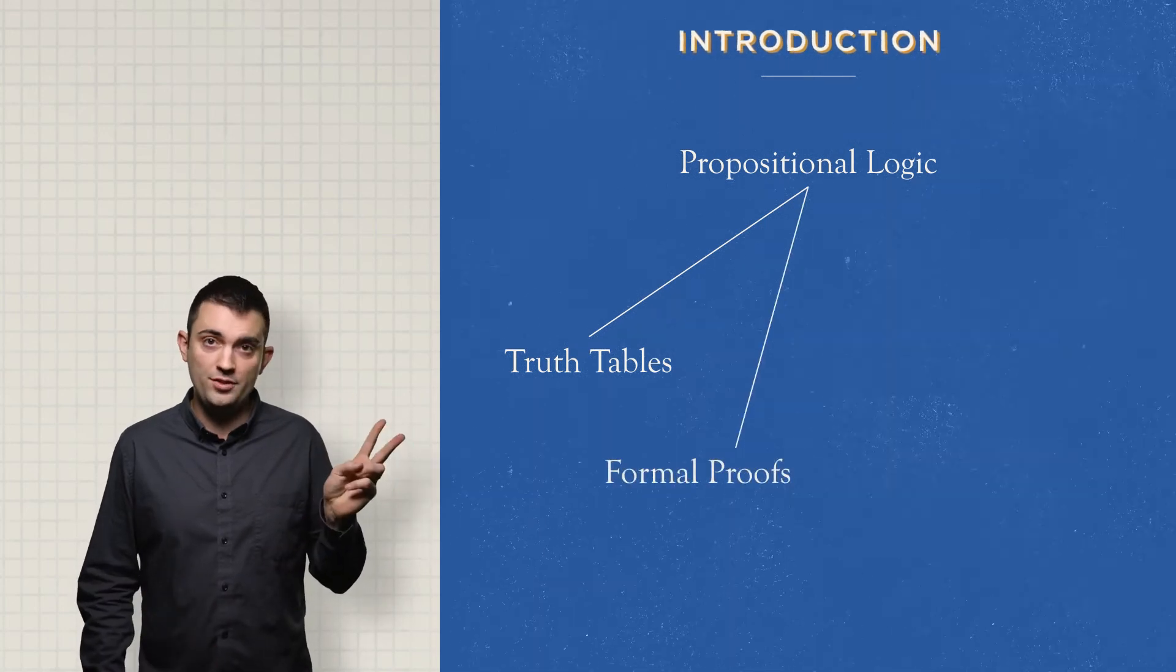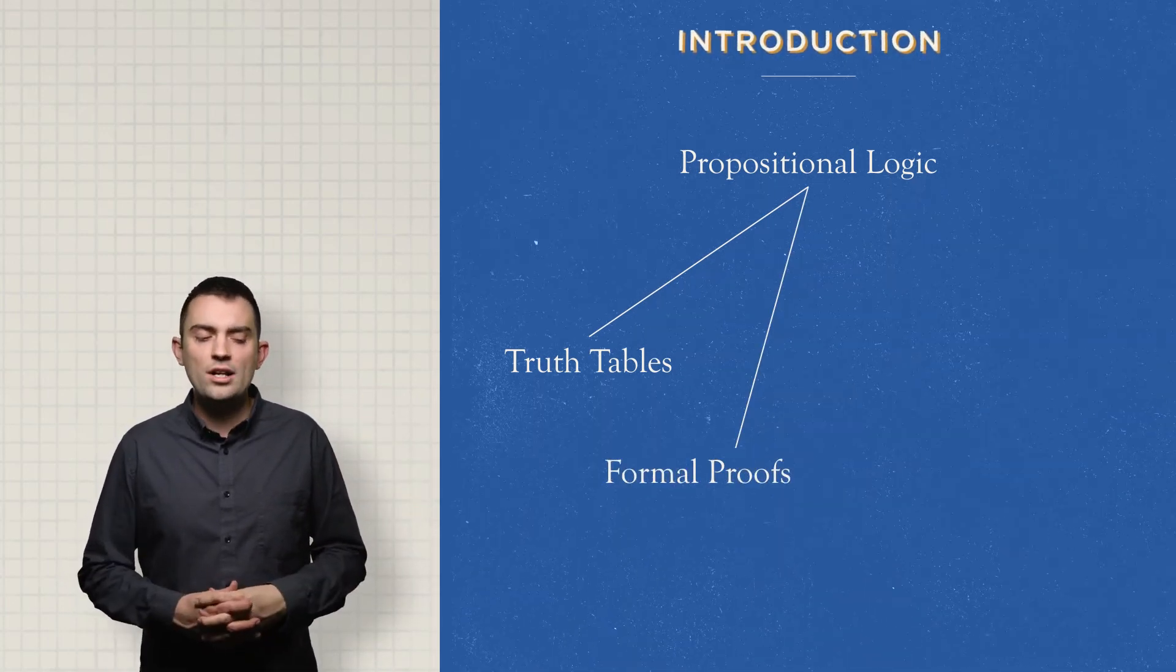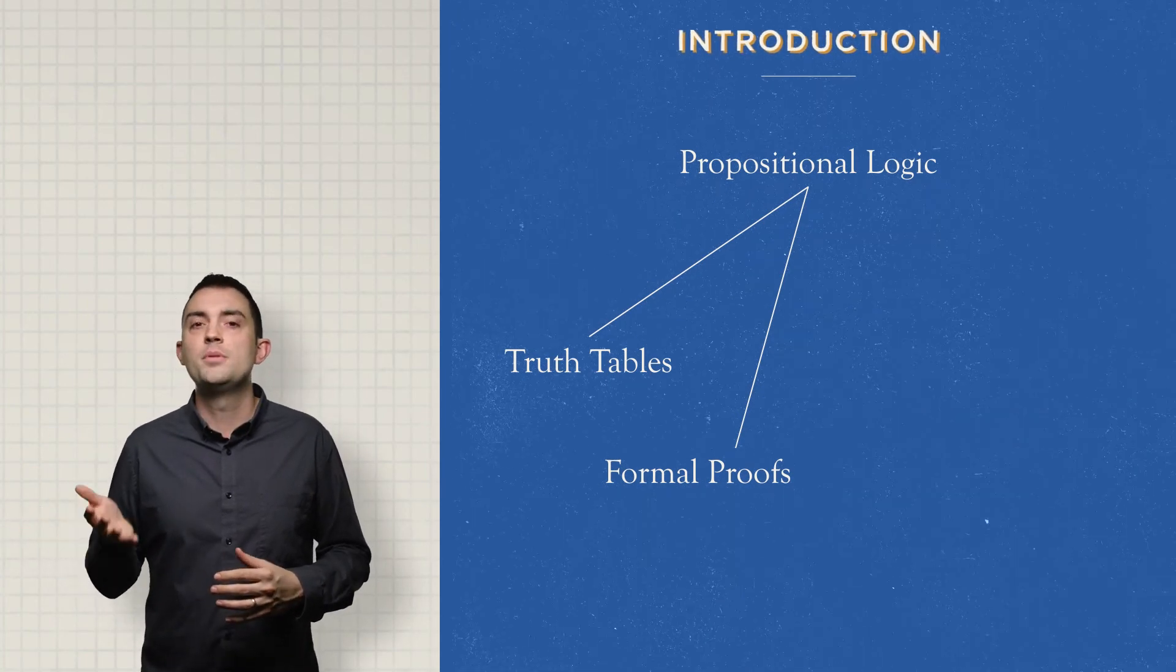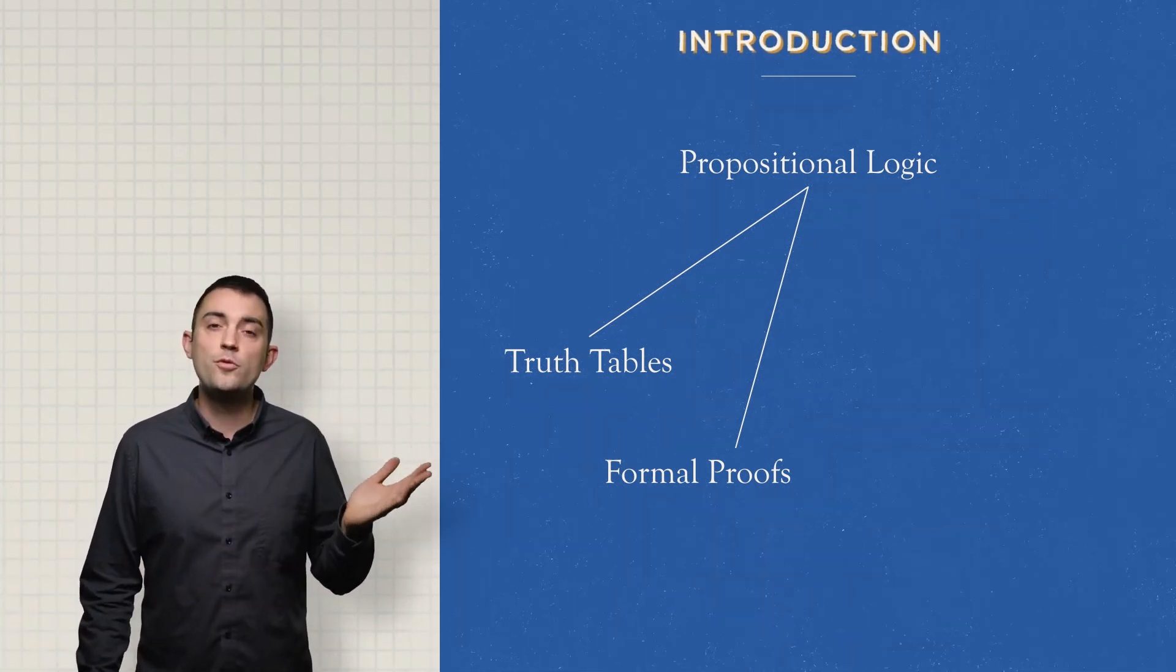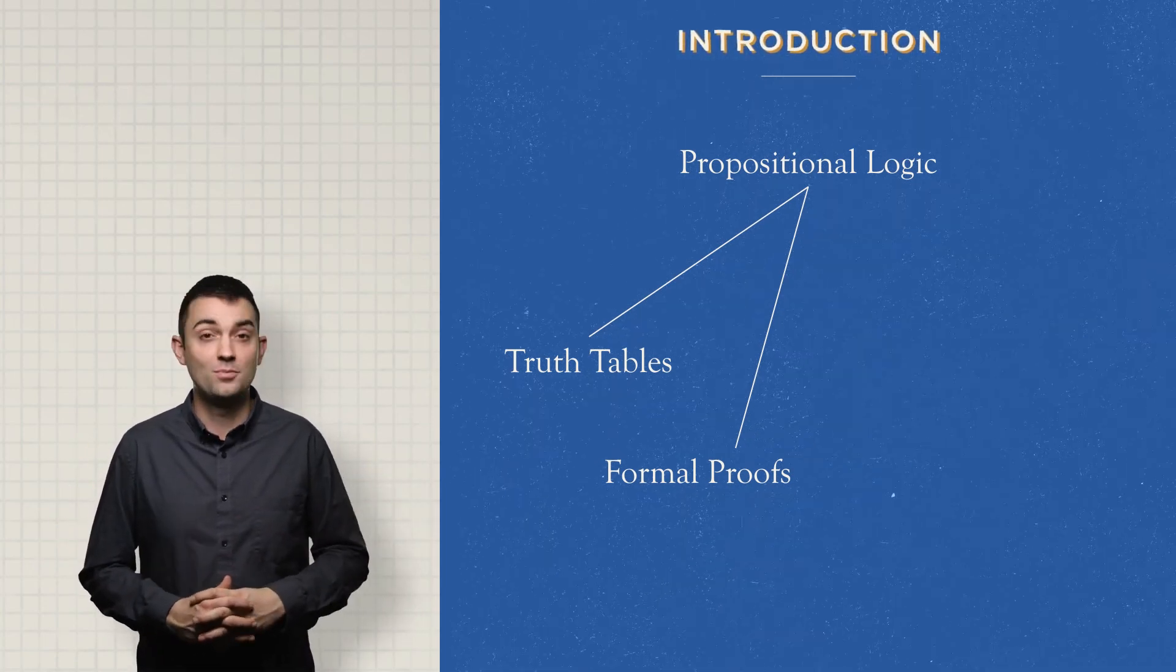Then, formal proofs of validity are ways of deducing the conclusion from the premises. Whereas truth tables can show an argument to be valid or invalid, formal proofs of validity show how the conclusion is derived from the premises. Pretty cool.